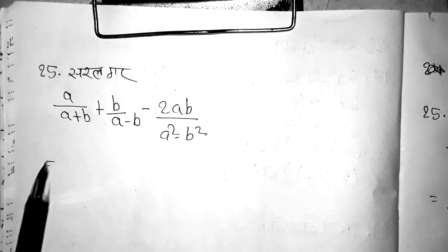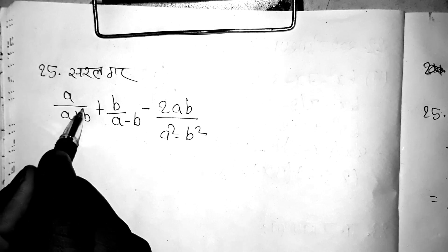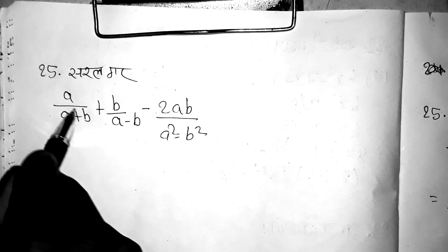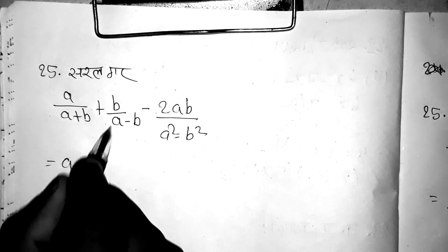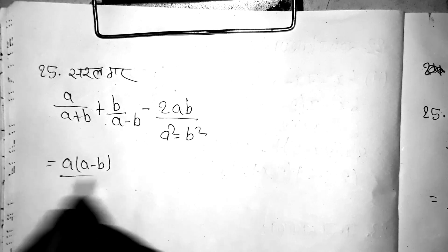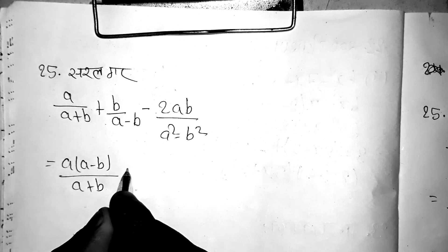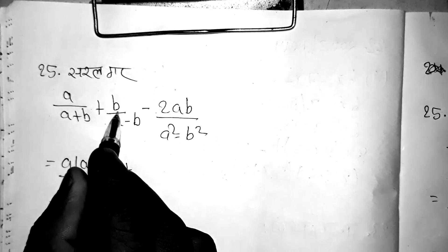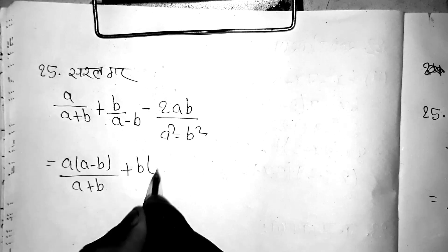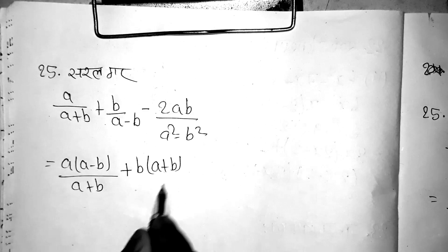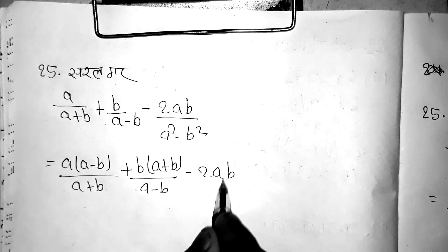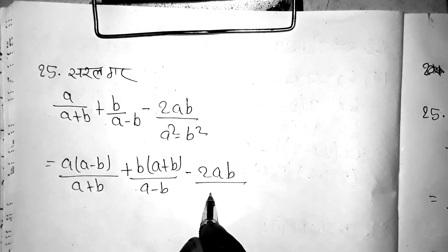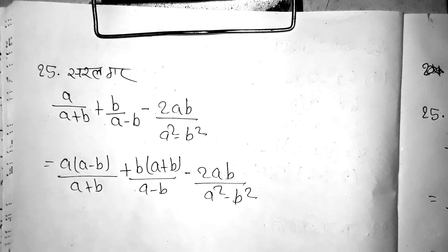We need to cross multiply the whole expression. Cross multiplying b into a plus b and b minus a, same as 2ab and a square minus b square.